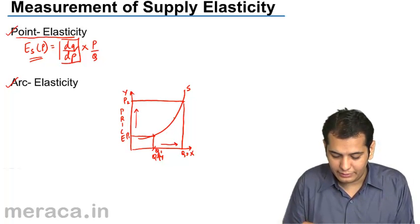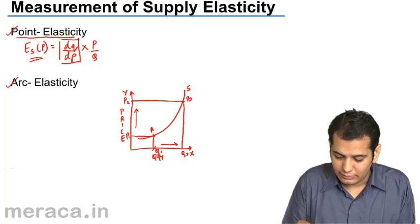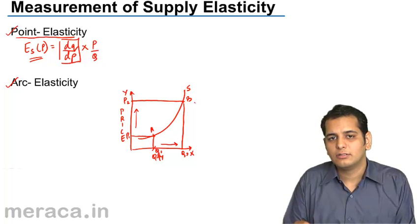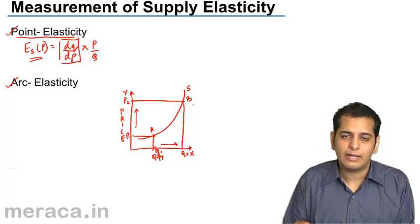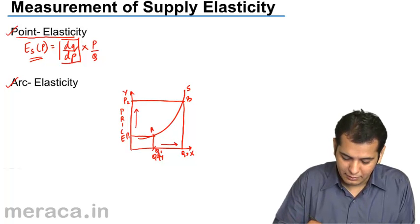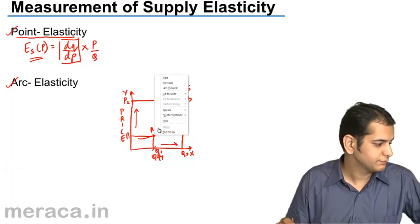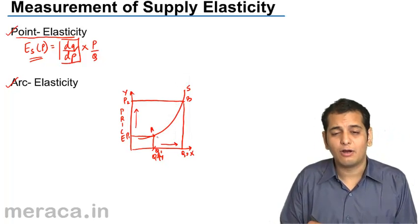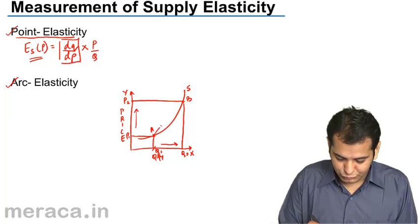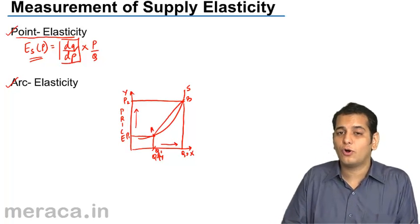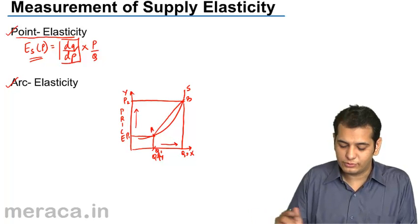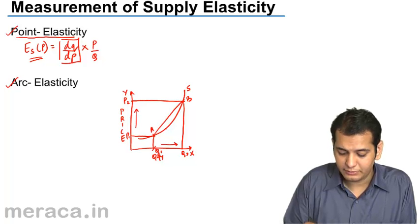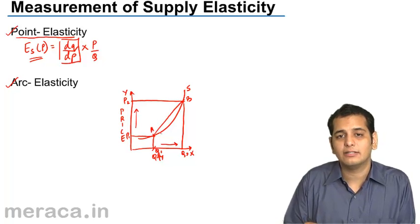If I want to calculate the elasticity between the two points A and B on the graph, I can calculate with the arc method. I join the two points with the help of a chord. This chord when joined forms an arc between A and B, and I have to calculate the arc elasticity.